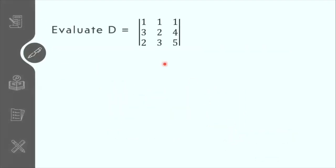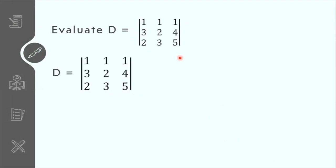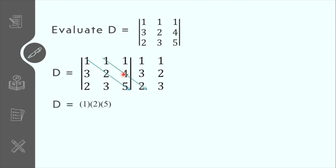Let us evaluate the determinant of order 3. Why is it order 3? Because it is a 3 by 3 matrix. First, let us copy the first column and the second column, and we start here at the principal diagonal. So 1 times 2 times 5, plus 1 times 4 times 2, plus 1 times 3 times 3.